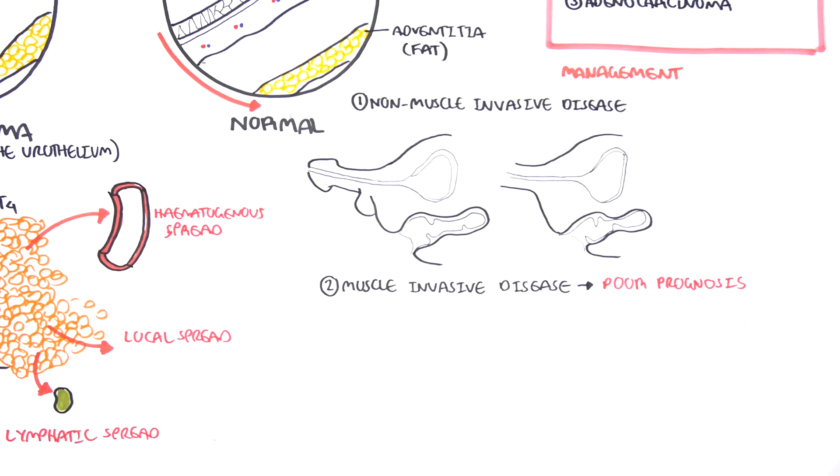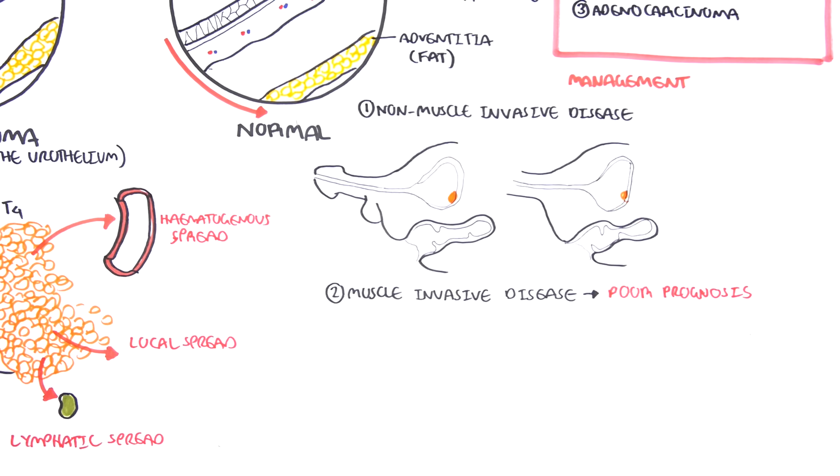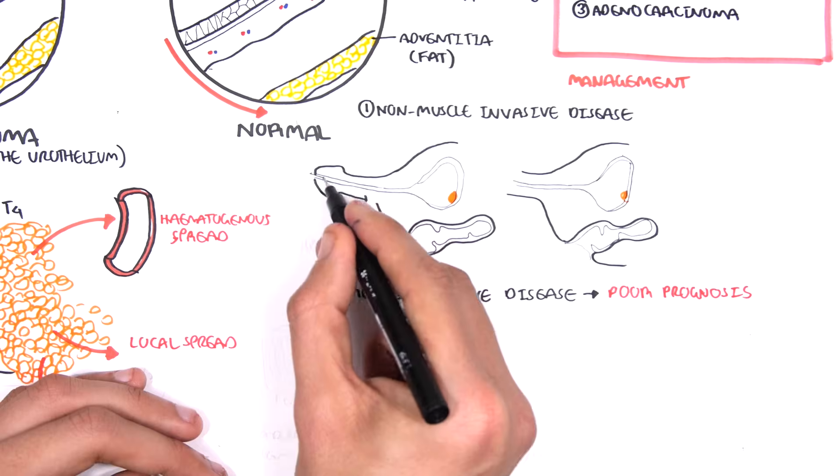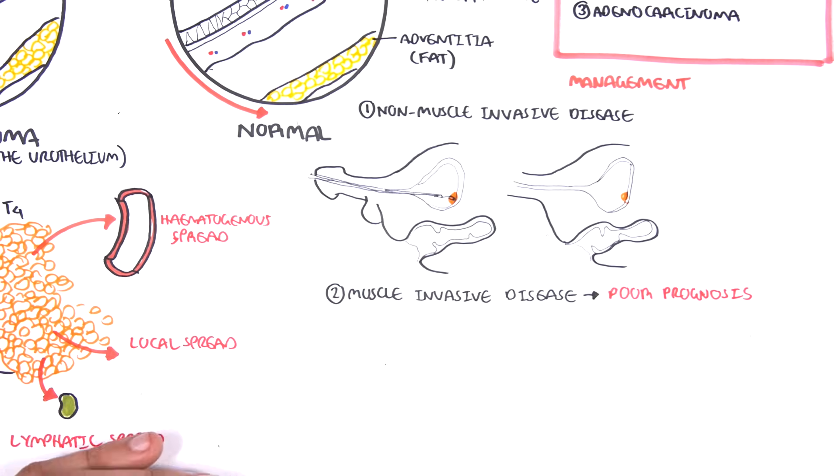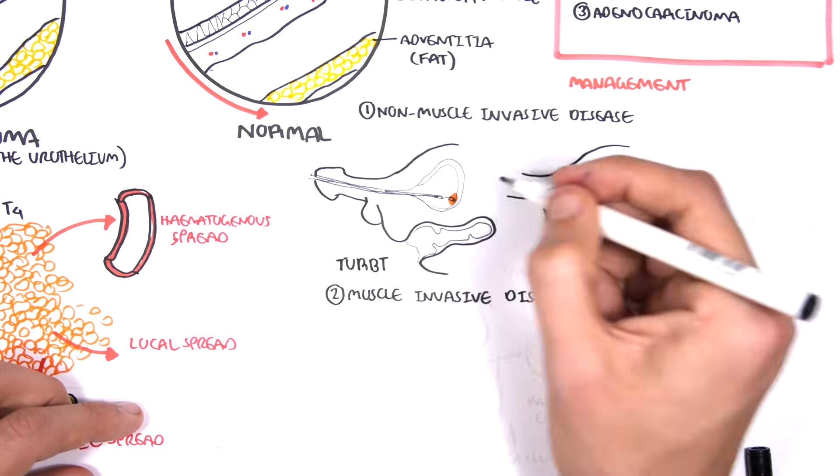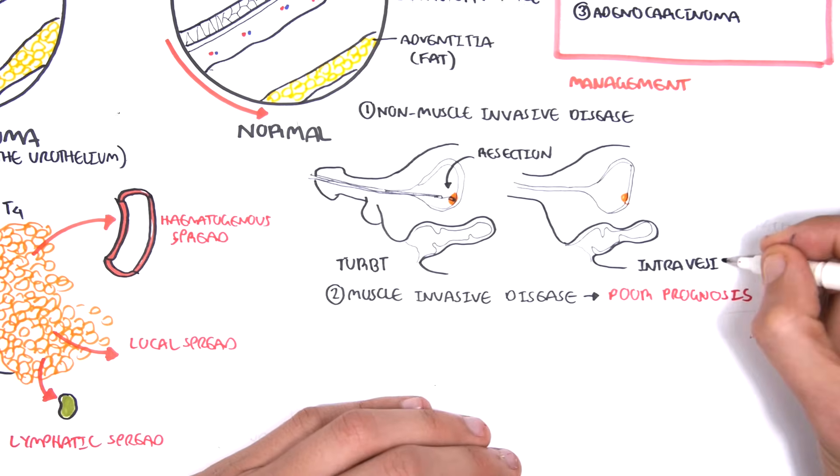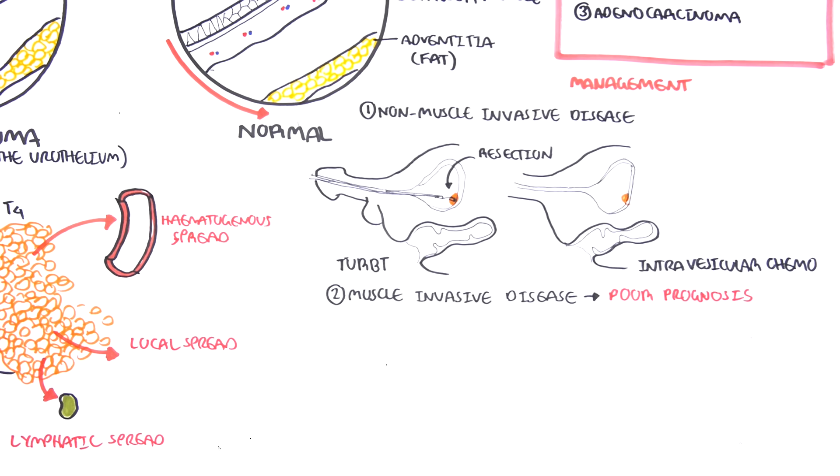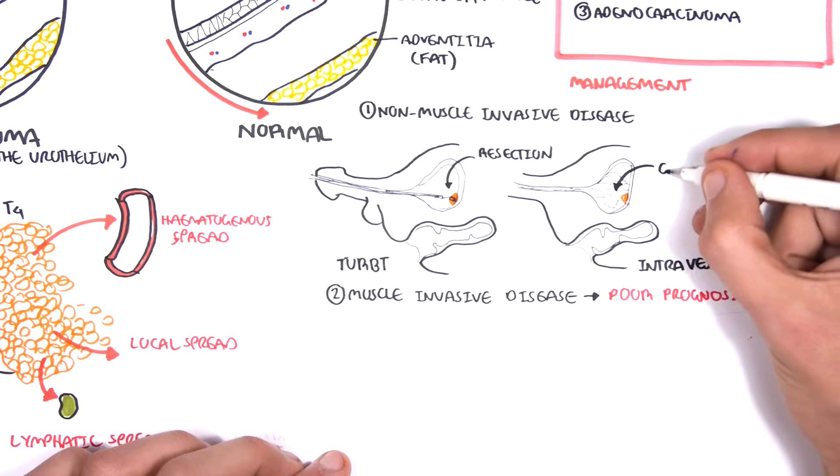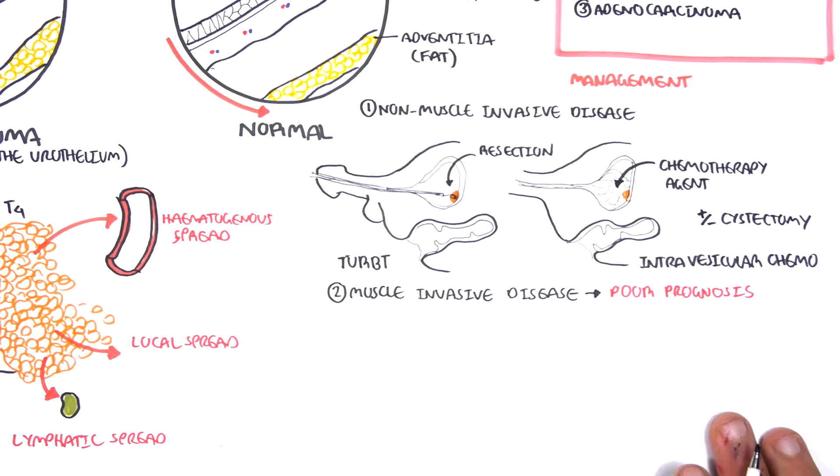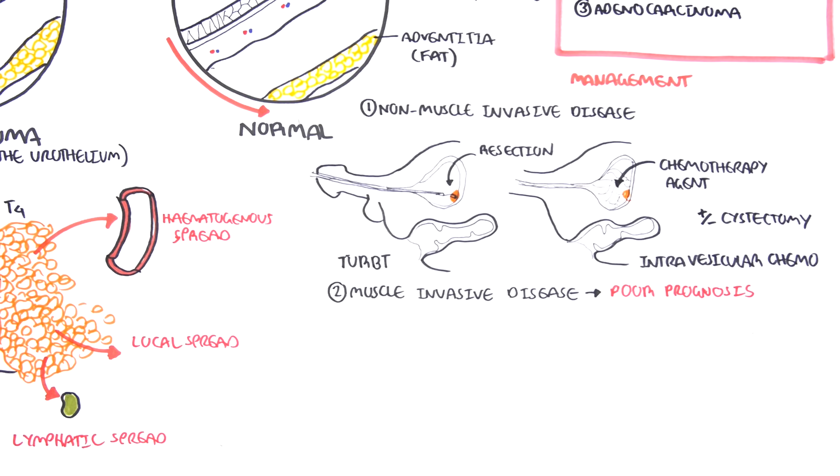In non-muscle invasive disease, treatment options include TURBT or TURBT, where you resect the tumor essentially. Or there is a method called intravesical chemotherapy, where the chemotherapy agent in liquid form is injected into the bladder and acts locally there. Finally, there is cystectomy, which is removal of the bladder.